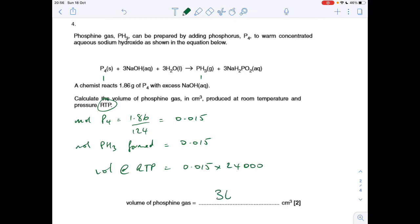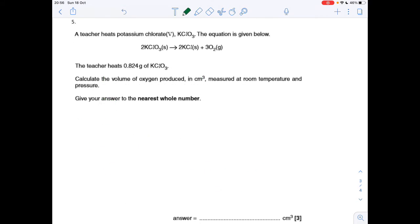Number five is another reacting volumes question. Again, it's at room temperature and pressure, so it's not ideal gas. We've got to give the answer in cm cubed to the nearest whole number. The teacher heats 0.824 grams of potassium chlorate. How much oxygen is produced? That's a 2 to 3 ratio I'll have to factor in.